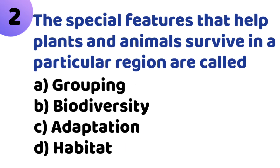Second question: The special features that help plants and animals survive in a particular region are called — Option A: Grouping. Option B: Biodiversity. Option C: Adaptation. Option D: Habitat. The correct answer is Option C, Adaptation.